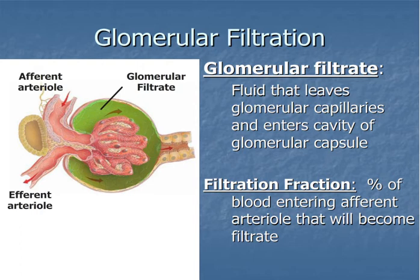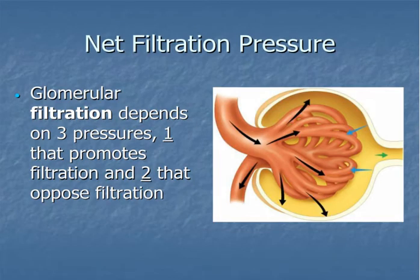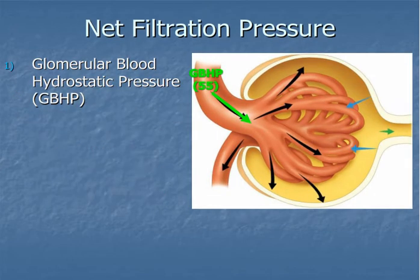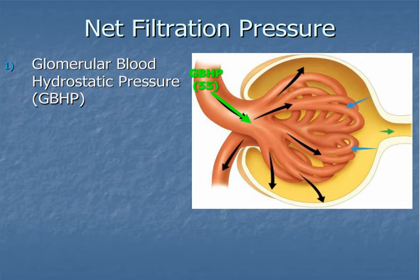The filtration fraction is the percent of blood entering the afferent arteriole that becomes filtrate. The primary factor determining filtration in the glomerulus is net filtration pressure. Glomerular filtration depends on three pressures: one that promotes filtration and two that oppose it. The primary pressure promoting filtration is glomerular blood hydrostatic pressure or GBHP — basically the pressure generated by the heart contracting. On average, pressure within the afferent arteriole is around 55 millimeters of mercury.